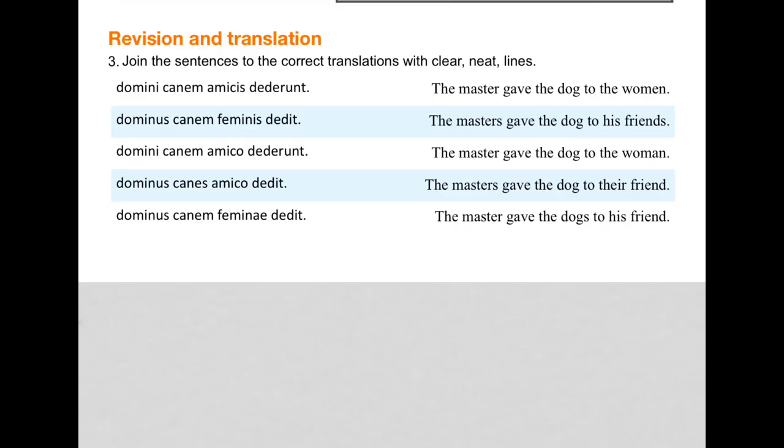And finally we're putting it into action with some translations. So let's work out how we can get the low hanging fruit here. We've got in the English 'the master' and 'the masters' gave 'the dogs' or 'dog' to 'friends' or 'women'. So let's go for the two with the women in, because there's just two of those. The master gave the dog - they're both the same - to the women, to the woman.